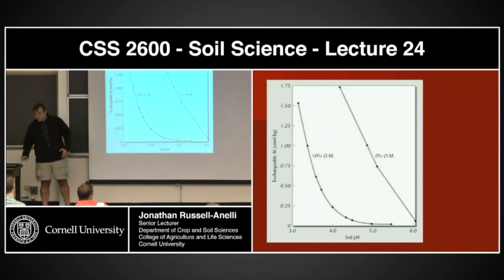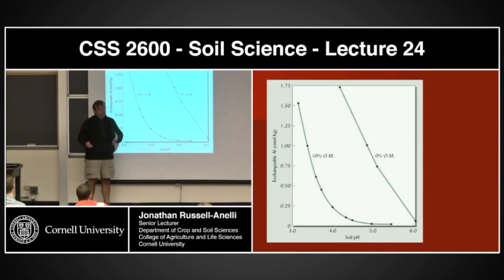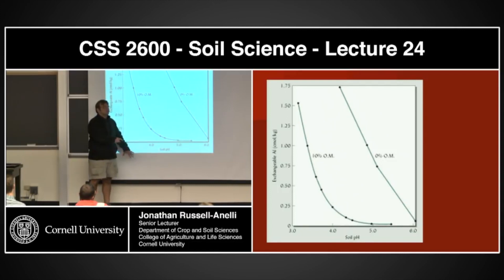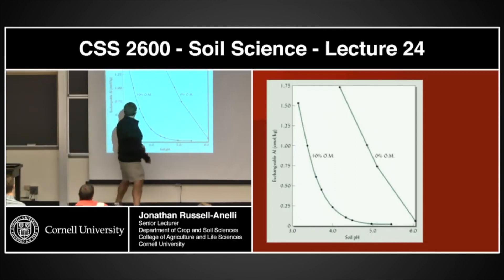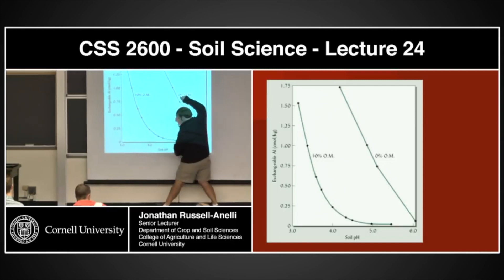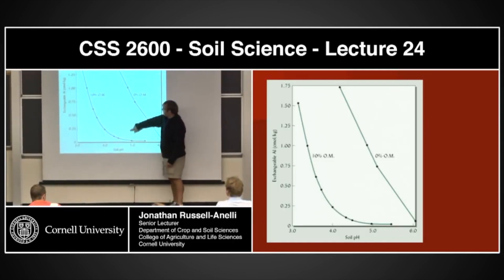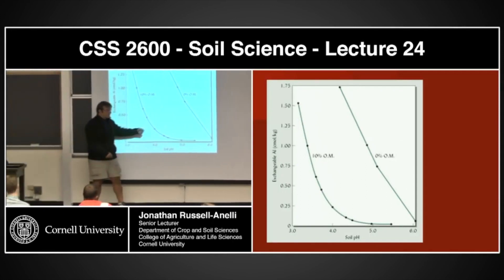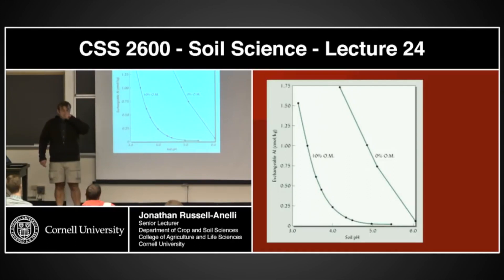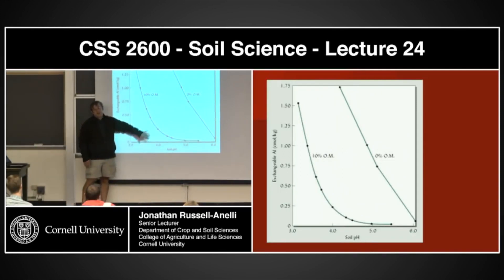So the organic matter is in essence acting as a buffer — not a buffer for the protons, but a buffer for the aluminum. It's binding with the aluminum. At the same pH, with organic matter versus without organic matter, we're basically seeing different levels of exchangeable aluminum. As the pH starts dropping, I get more and more aluminum into the soil solution. But with organic matter, that aluminum is going to bind with the organic matter and reduce the amount of aluminum in the soil solution, giving less of a toxic effect.